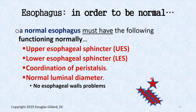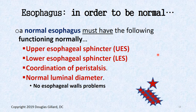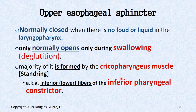In order to be normal, the esophagus must have a functioning upper esophageal sphincter, a normal lower esophageal sphincter, peristalsis when you swallow food — pushed down by a wave of contraction of the muscular wall — and a normal-sized lumen. Luminal stenosis and other things can block food. All of those have to be normal.